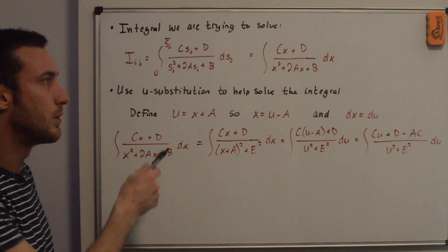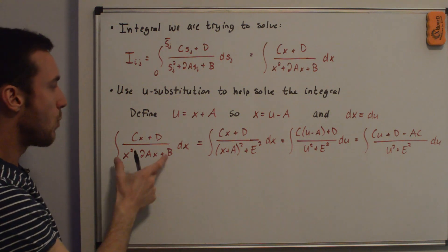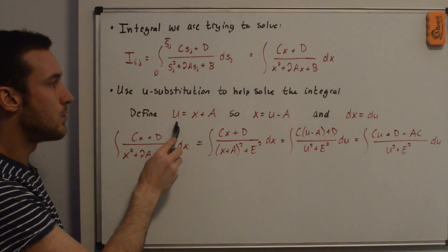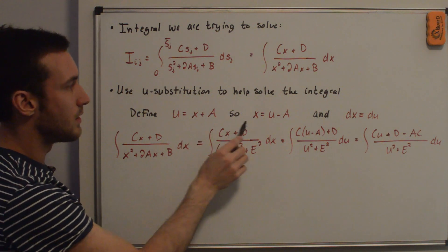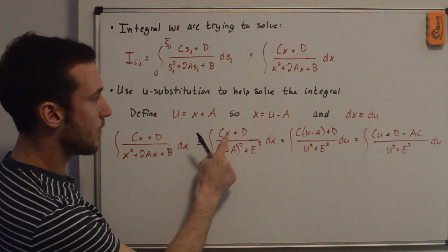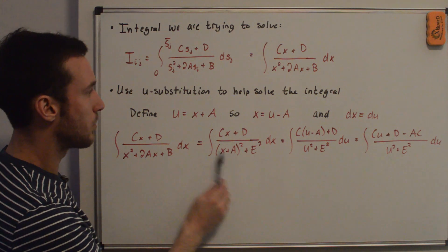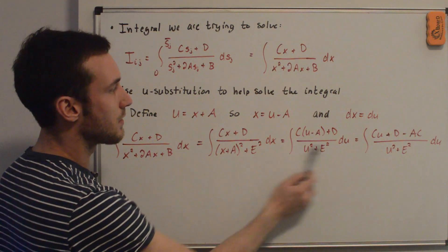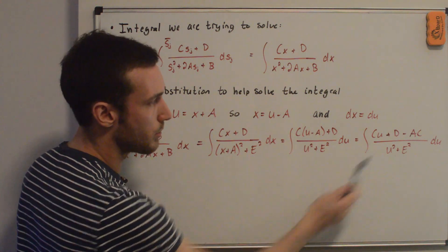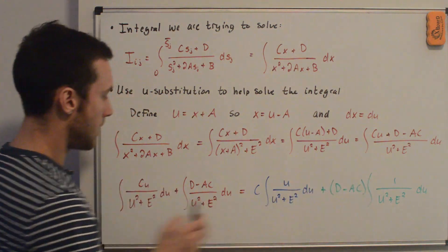We'll use u-substitution to break the integral into two separate, easier-to-solve integrals. With the denominator as (x + a)² + e², we define u = x + a, so x = u - a and dx = du. The integral becomes the integral of [c(u - a) + d] / (u² + e²) du. Distributing gives (cu + (d - ac)) / (u² + e²) du, which splits into two integrals: c times the integral of u/(u² + e²) du, plus (d - ac) times the integral of 1/(u² + e²) du.